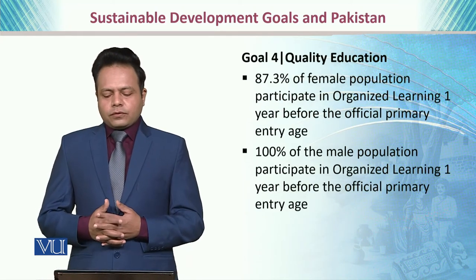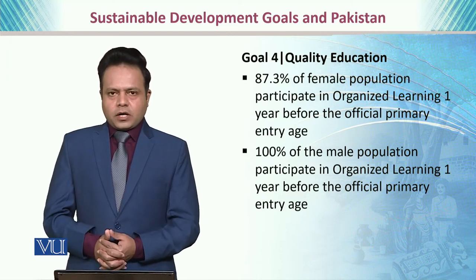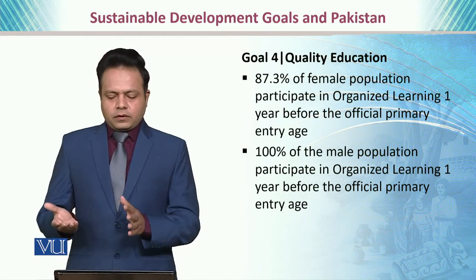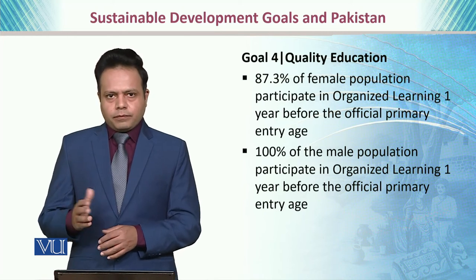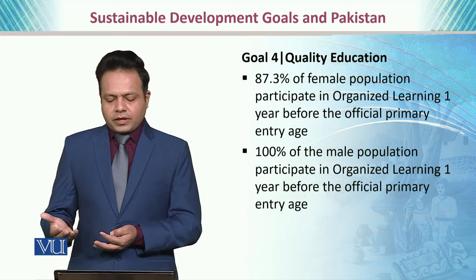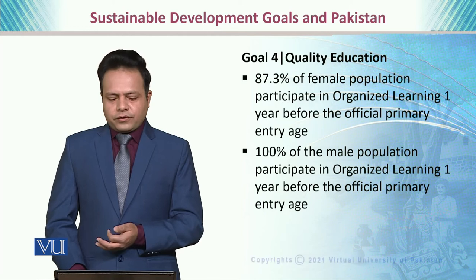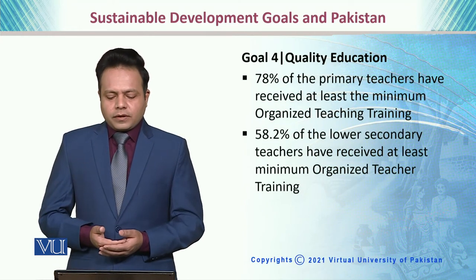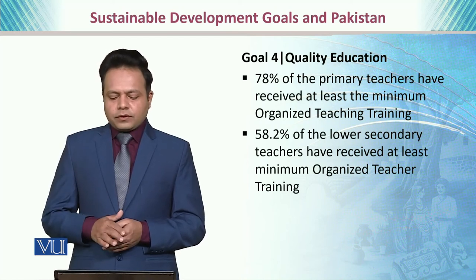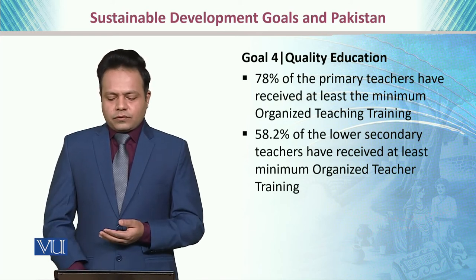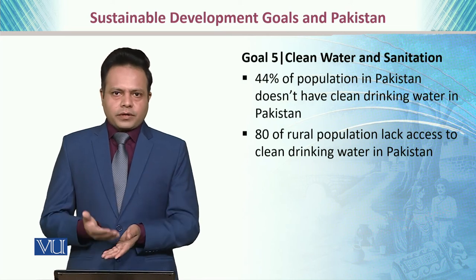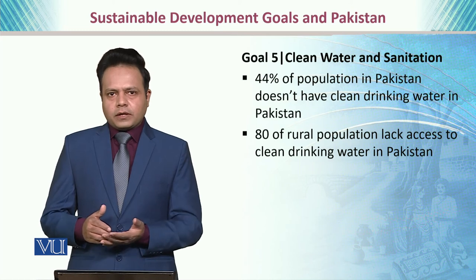Goal four is to have quality education available for Pakistanis. We see that 87.3% of the female population participates in organized learning for year one before the official primary school age. 78% of primary teachers have received at least the minimum organized teacher training. For goal four, we are progressing, as our literacy rate is increasing.